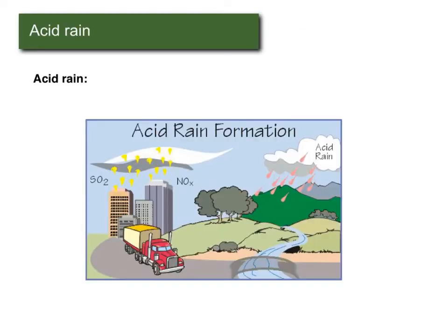Acid rain is the term given to rain that has a pH lower than 5. The lower the pH is, the more acidic it is, with 7 being neutral. Rain is naturally slightly acidic because of the things floating around in our air, but that can be made worse by pollutants.